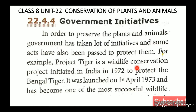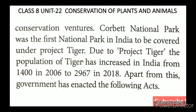For example, Project Tiger is a wildlife conservation project initiated in India in 1972 to protect the Bengal tiger. The Corbett National Park was the first national park in India to be covered under Project Tiger. Due to Project Tiger, the population of tigers has increased in India from 1,400 in 2006 to 2,967 in 2018.